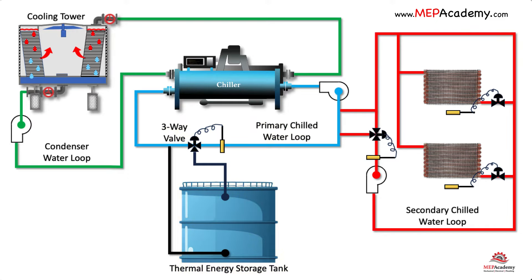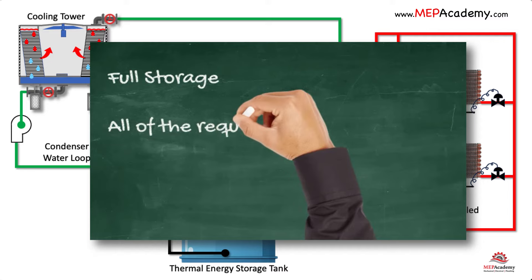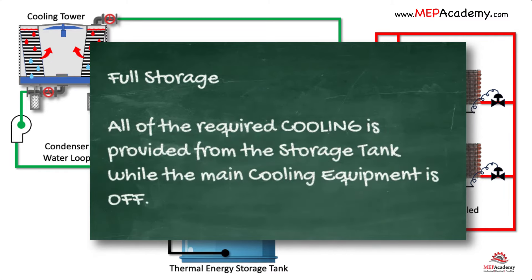The system can run using just the chillers, or the chiller could be run at night to charge the storage tank when electrical rates are cheaper. The three-way valve will close, forcing the chilled water to go through the tank. During the day, when the electrical rates are higher, the chilled water can be pulled from the tank in a full storage system and sent to the air handler coils without the use of the chillers.